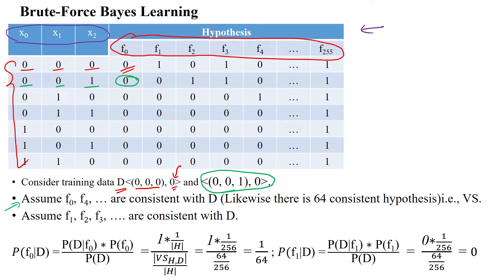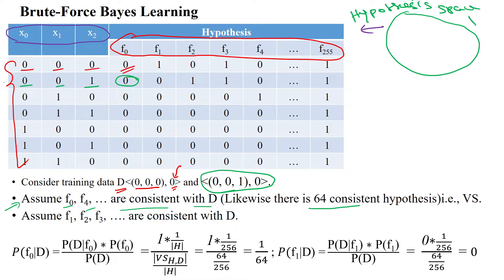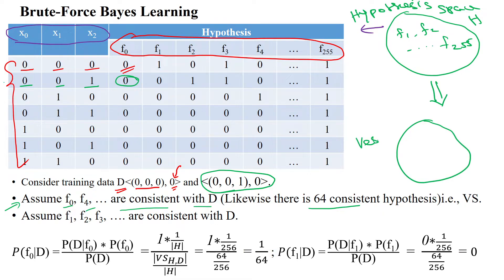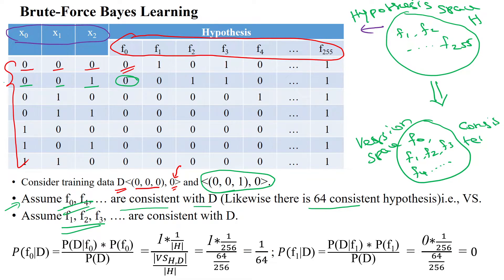We assume F0 and F4 are consistent with respect to data D. Likewise, we assume 64 consistent hypotheses total. In the hypothesis space we have 256 hypotheses: F1, F2, ..., F255. Among these, the version space contains only 64 hypotheses. These 64 hypotheses — F0, F1, F2, F3, F4, etc. — are all assumed as consistent hypotheses. Consistent hypotheses only are available inside the version space, while hypothesis space contains all hypotheses.